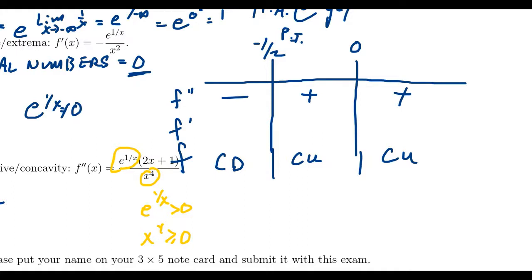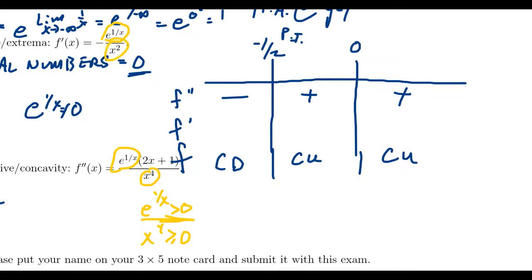The function has no extrema: the only critical number is at x equals 0, but since the function has a vertical asymptote there, it cannot be a local maximum or minimum. For monotonicity, the first derivative is negative e to the 1 over x over x squared. Since e to the 1 over x is always positive, x squared is always non-negative, and there's a leading negative sign, the first derivative is always negative. So the function is always decreasing, except at x equals 0 where it's undefined.